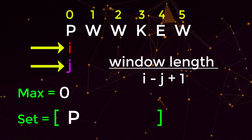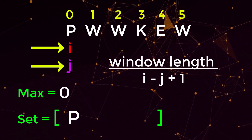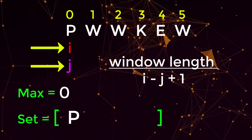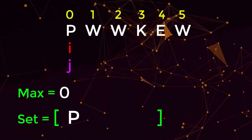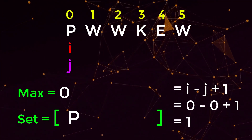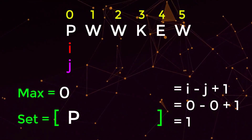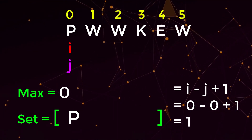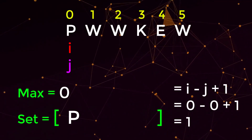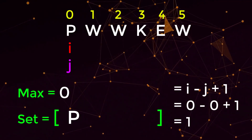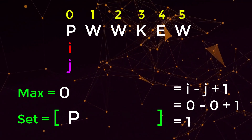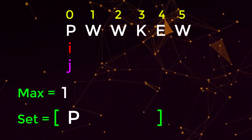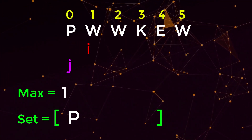The length of our window will always be the difference between our i and j pointer plus one. The reason we do plus one is because j minus i alone is zero-based — those are indices — so we add one to offset it. So i minus j plus one equals one, which corresponds to the singular 'p' substring we have in our set. This means substring 'p' is the longest so far, and we update our max to length one.